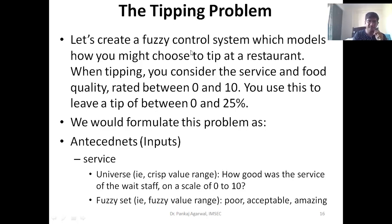We formulate the system so that the inputs — called antecedents — are basically service and food quality. For service, the universe could be: how good was the service of the waiters and staff, on a scale of 0 to 10. Then, since every crisp value needs to be converted into a fuzzy value, we can create a scale saying that 0 to 4 is 'poor,' and 'acceptable' can be from 5 to 7.